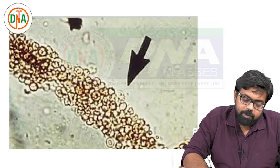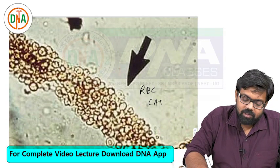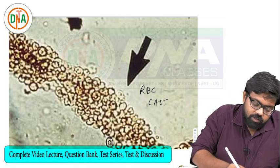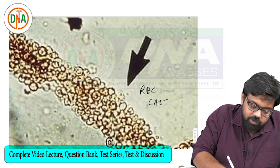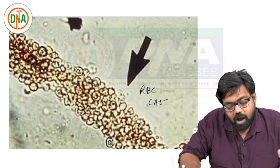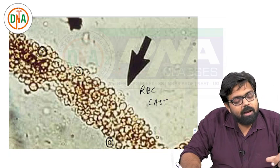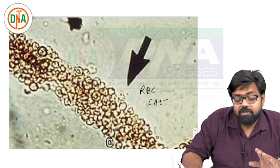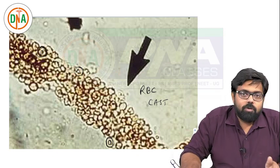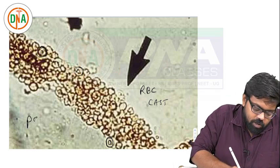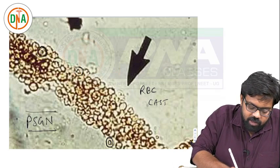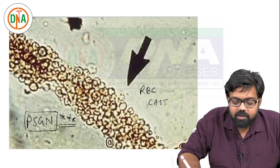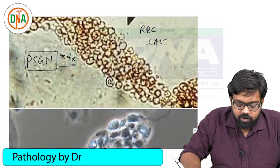What you are looking at is an RBC cast. To identify it, you can appreciate RBCs showing a central pallor. RBC cast means RBCs are attached or studded to the surface of the cast. This is specific for glomerulonephritis, more specifically post-streptococcal glomerulonephritis. This is a frequently asked MCQ - RBC cast is seen in post-streptococcal glomerulonephritis.